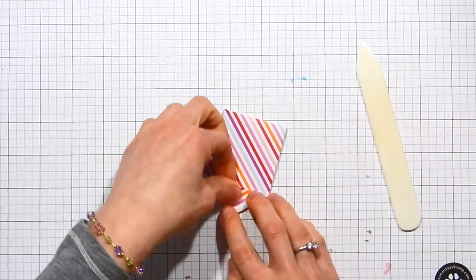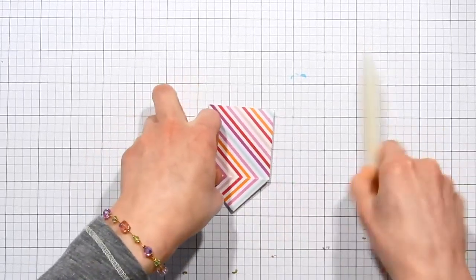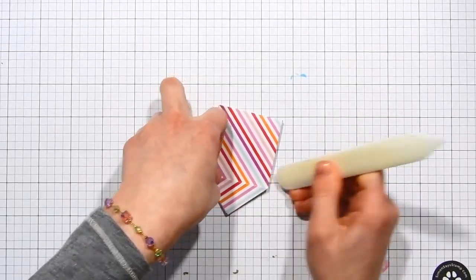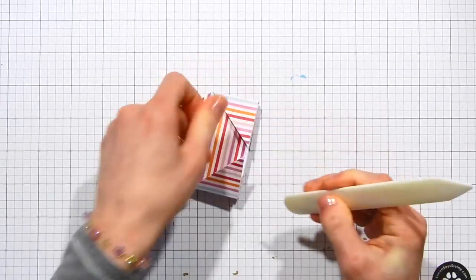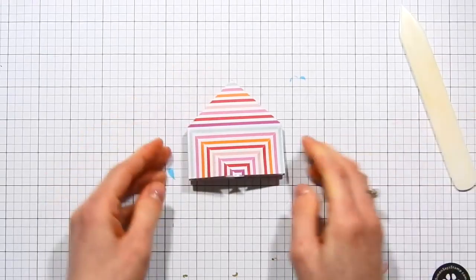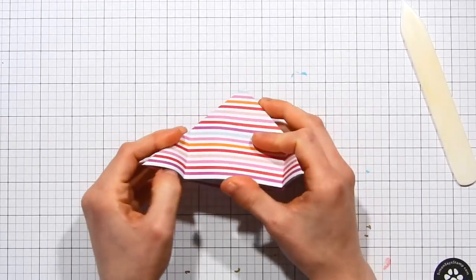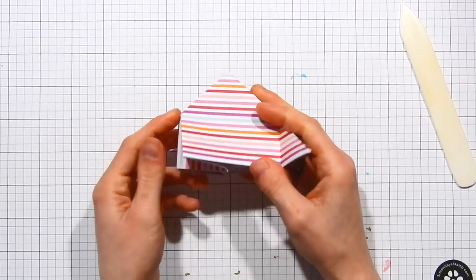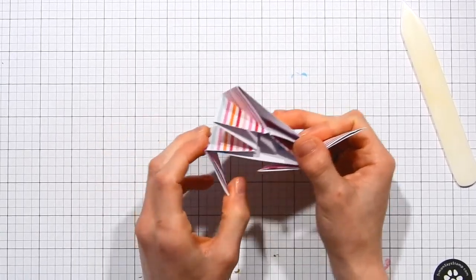I went ahead and folded over the sides of my triangles on both sides. So I folded over the triangle on the first layer and then flipped it around to the other side of the paper and I folded those sides over. Now you can see we have triangles on both sides of this paper, and now we're going to go ahead and invert those like we did for the first triangle.